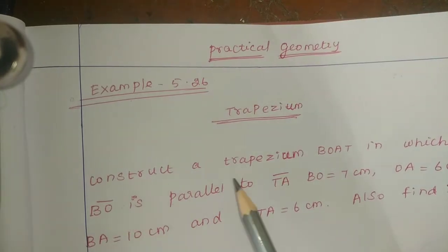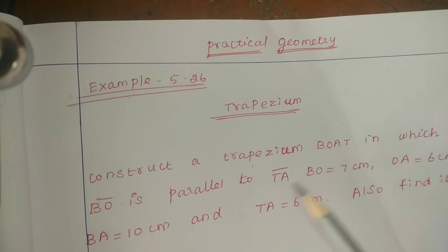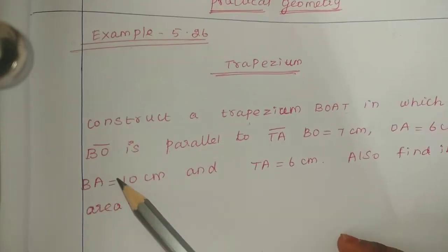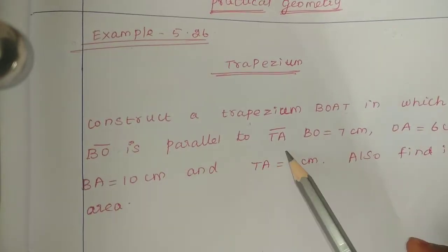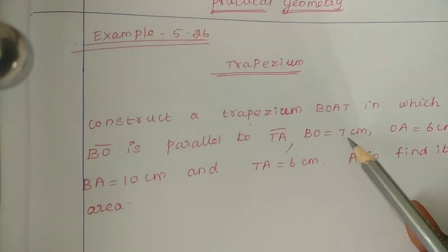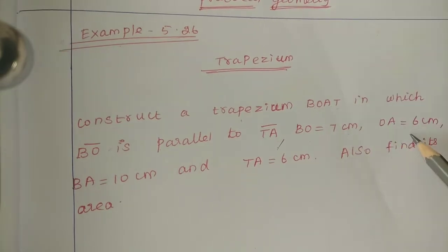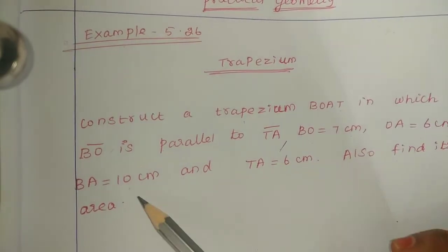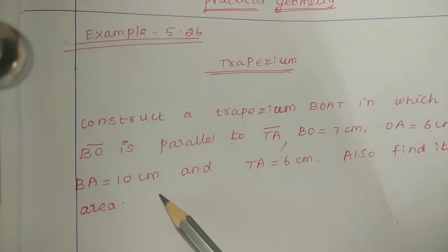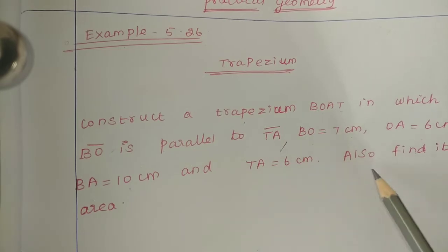Construct the trapezium BOAT in which BO is parallel to TA, BO equal to 7 cm, OA equal to 6 cm, BA equal to 10 cm, and TA equal to 6 cm. Also find its area.